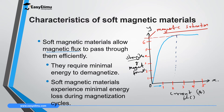These materials also require minimal energy to demagnetize. If you withdraw the current, the dipoles go back to their original position very quickly. When the current comes back to zero, the strength of the magnet also returns to zero.